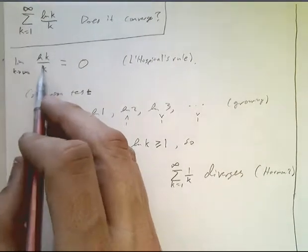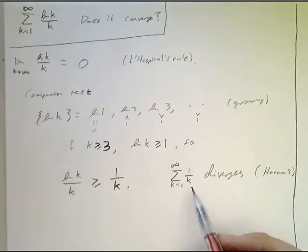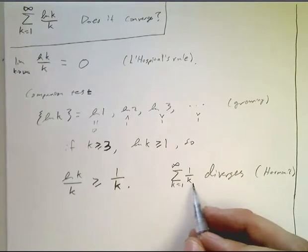This looks like the harmonic series, only the numerators are growing, meaning the terms are even bigger. So I have a series whose terms are even bigger than the terms of a series which I know diverges.